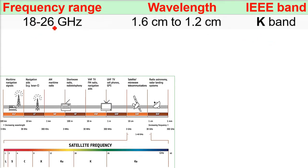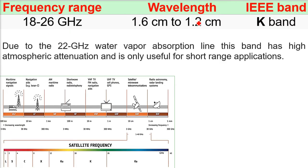Then K, it is 18 to 26. In Wiki it is 18 to 27. Due to the 22 gigahertz water vapor absorption line, this band has a high atmospheric attenuation. It is only used for short range application.